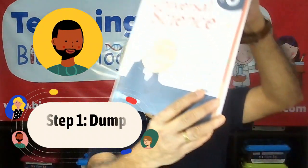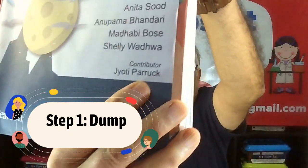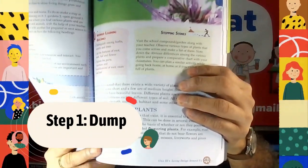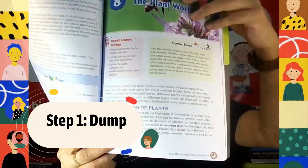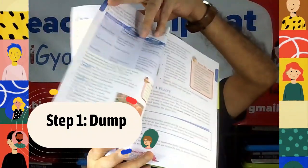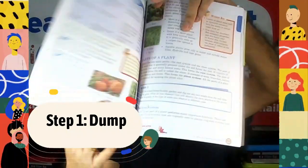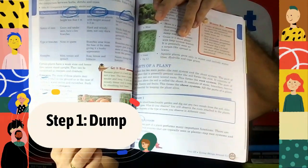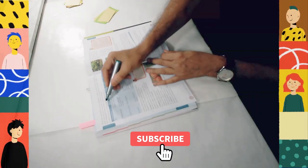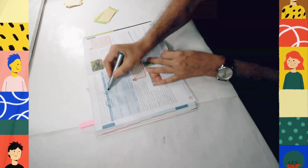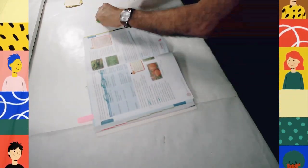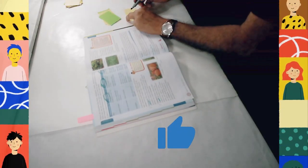First step is called dump. When you do this exercise with your students, they will work together. Ask them to use headings, tables, bold words, captions, or pictures to help them find words to put in their dump. So here you can see some big headings like herbs, shrubs, trees, creepers, climbers, so they can write these in their post-it pad.